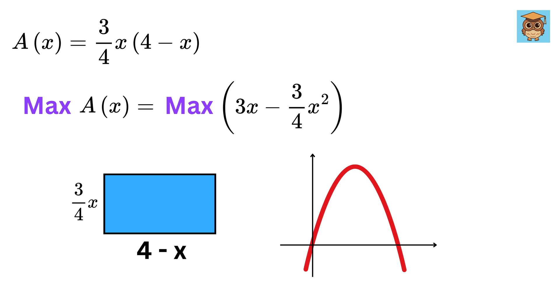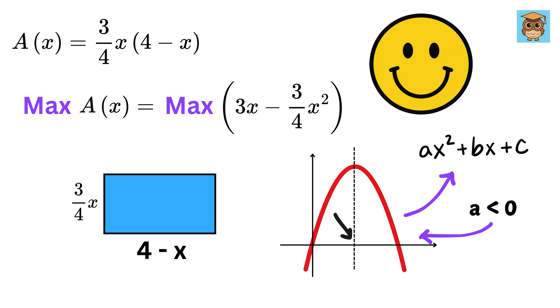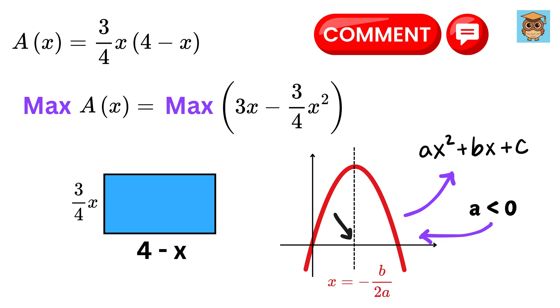Now, here comes the magic. This is a parabola of the form y equals ax squared plus bx plus c. When the value of a is less than 0, the curve looks like this, and this is the point where the value of this function is maximum. And you will be happy to know that the formula for the value of x at this maximum is simply minus b over 2a.